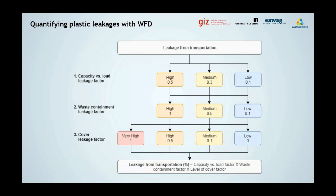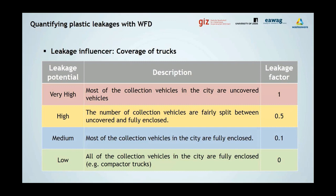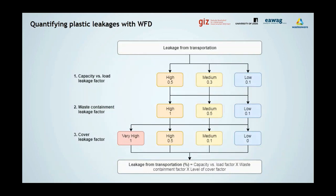For each leakage influencer, the observer judges what the leakage potential is. For each potential level, the manual provides a general description and a leakage factor representing the percentage of plastic at that stage that could turn into leakage — these are expert-based factors. For instance, if all trucks in a city are compactor trucks, the leakage potential due to coverage would be very low. But if most of the city uses uncovered trucks spilling waste as they drive through, the leakage potential would be very high. All leakage influencers, their different leakage potentials, and corresponding leakage factors are arranged in decision trees — one for each stage of the solid waste management system. The tool then combines the corresponding leakage factors using a formula to calculate the amount of plastic leaking from that stage automatically.